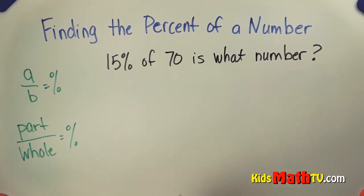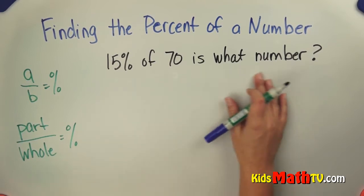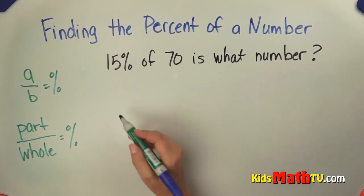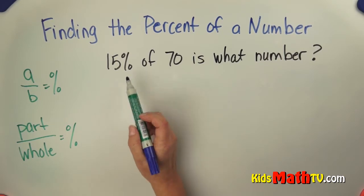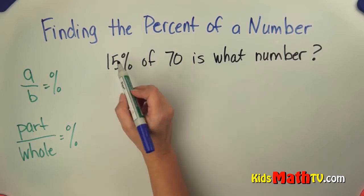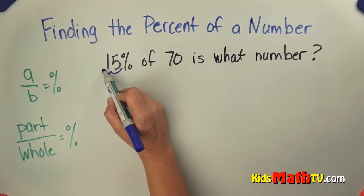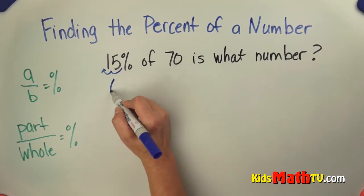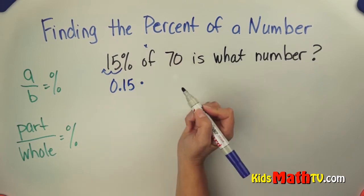There are a couple ways to do this. We can simply translate this sentence into a mathematical equation. So 15%, we can write that as a decimal. We divide by 100 to make it into a decimal, which is 0 and 15 hundredths. Of translates to multiplication.